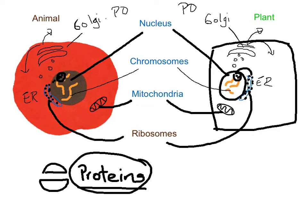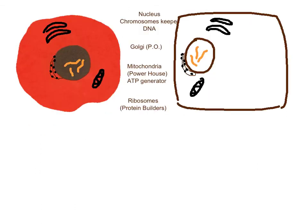Now let's start talking about what is different — time to mention a difference besides the shape. You might notice that on the plant cell, the organelles are a little bit pushed to the side. These plant cells have huge vesicles in here.